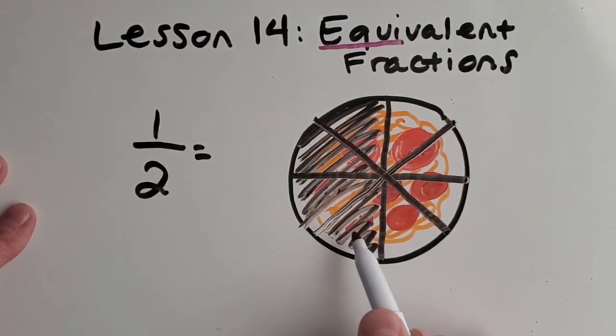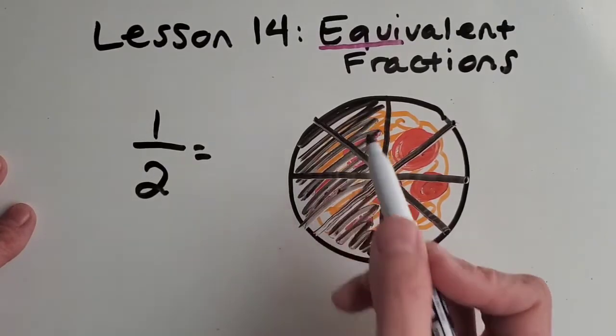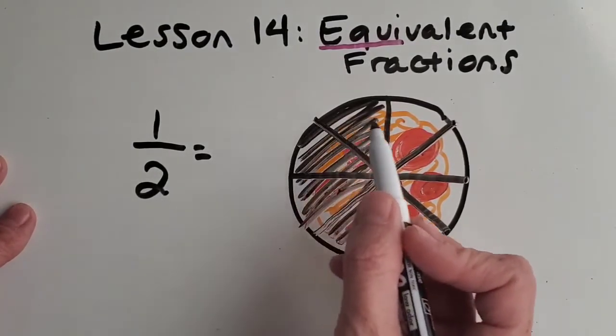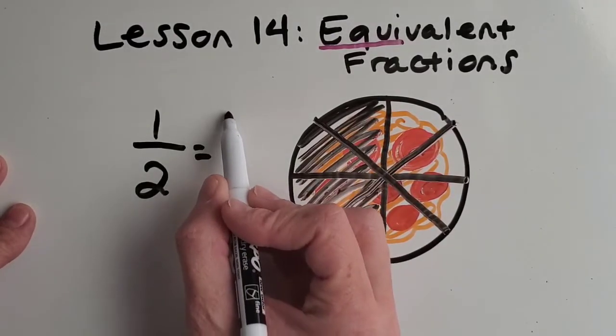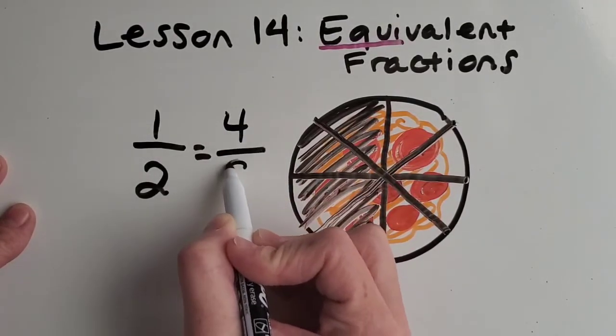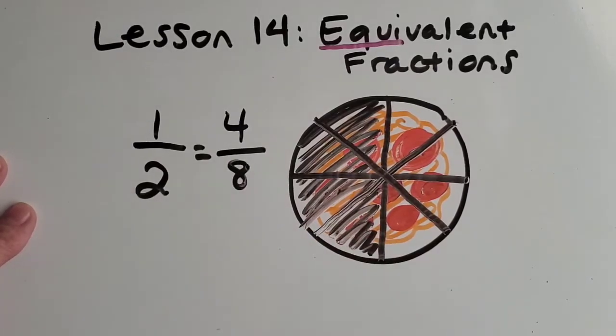So now let's just count how many slices are equivalent to the amount that I ate. One, two, three, four. So that is four eighths, the same as one half.